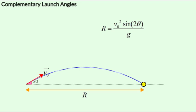Now is it possible to obtain the same range for two different launch angles, keeping the initial speed the same?